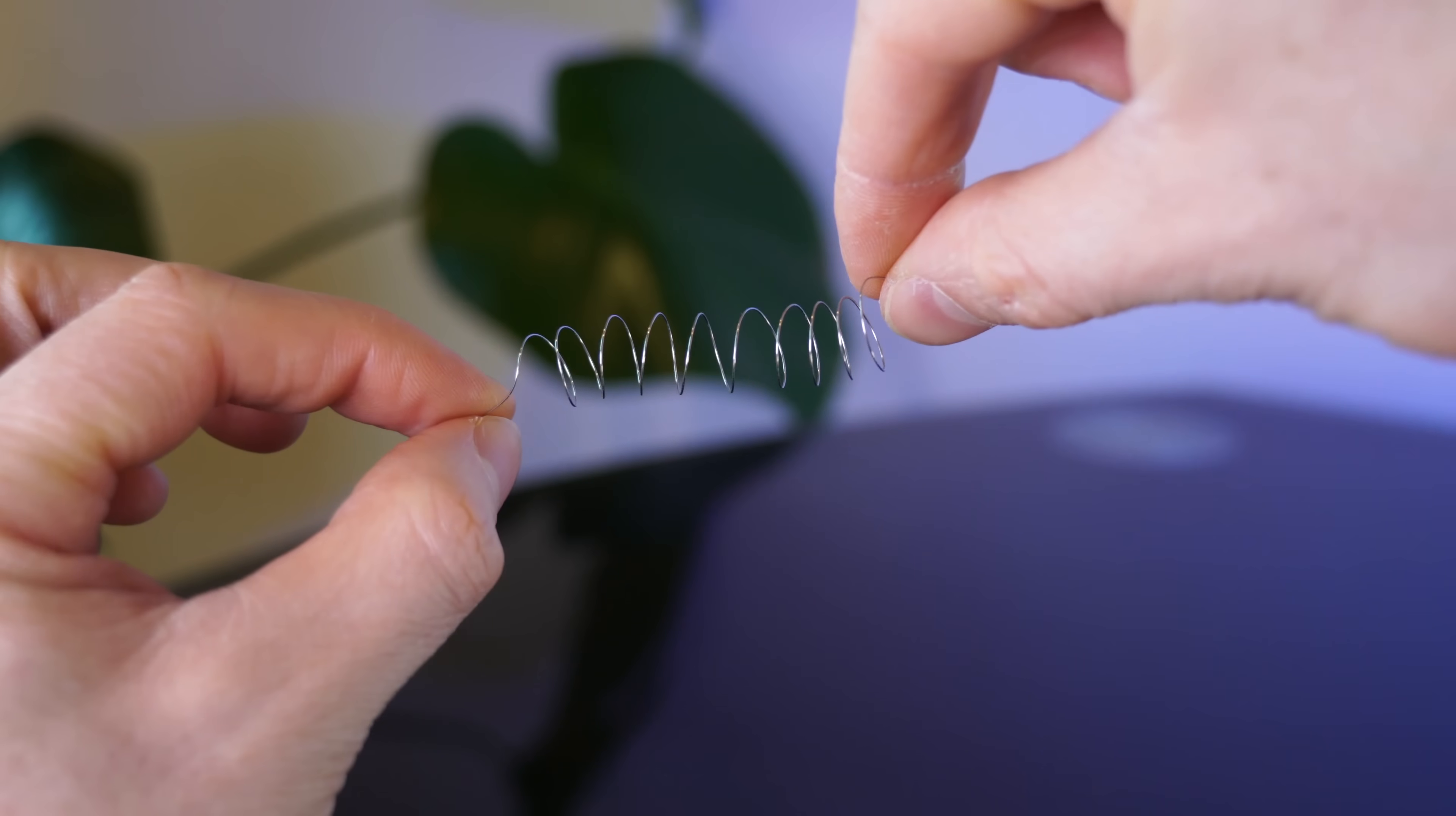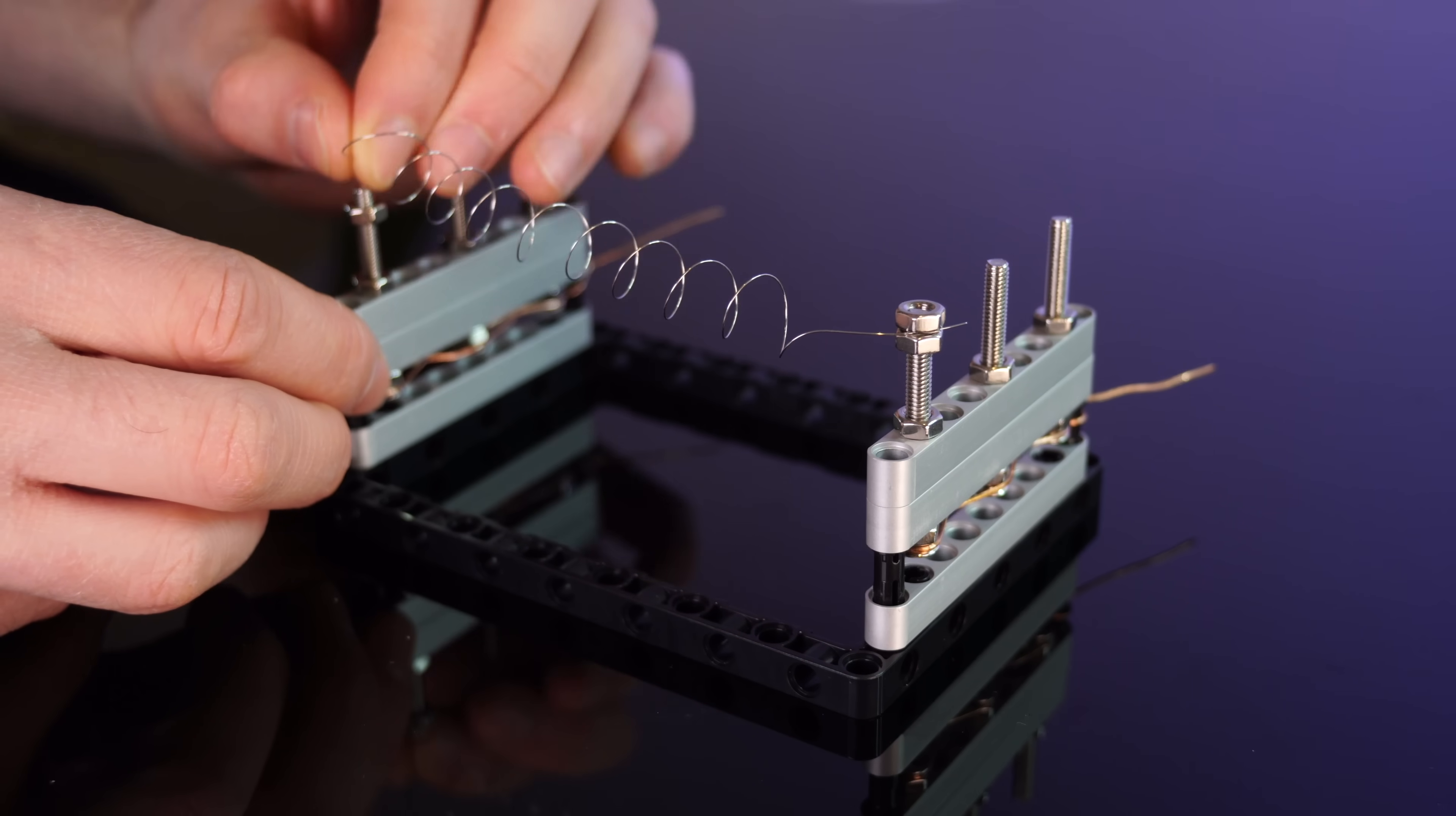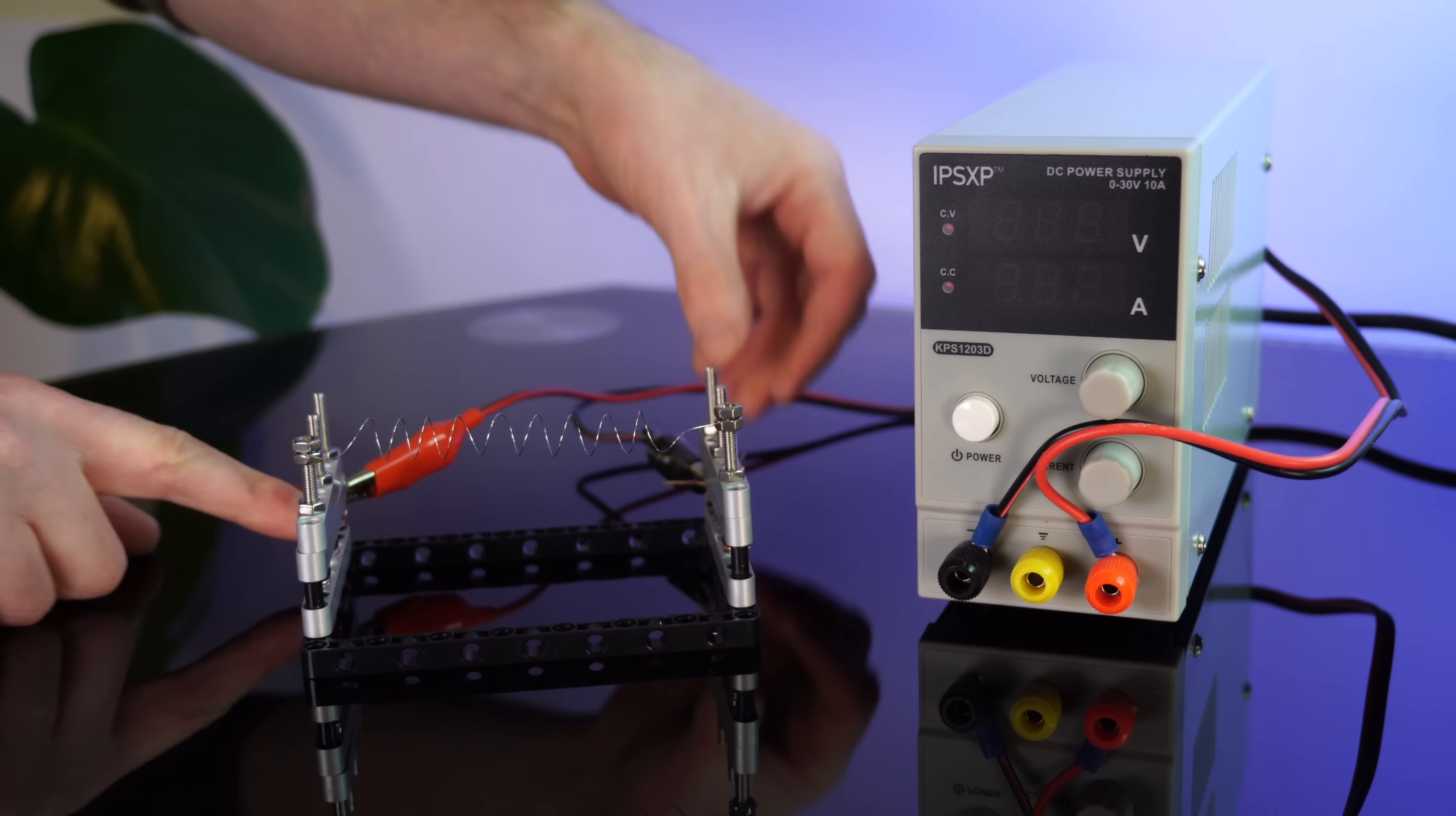Speaking of, let's make this thing hot. We'll start with some thin 28 gauge nichrome wire as a test. These steel bolts then will allow us to secure the wire a small distance away from the aluminum and plastic. So let's chuck some power through this.